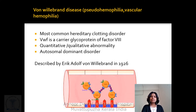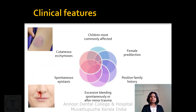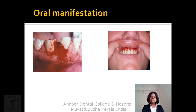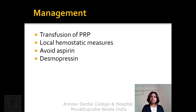Von Willebrand disease, also known as pseudohemophilia or vascular hemophilia, is the most common hereditary clotting disorder. Von Willebrand factor is a carrier protein for factor 8, and the disease involves quantitative or qualitative abnormality of this factor. It is an autosomal dominant disorder, first described by Erik von Willebrand in 1926. Clinical features: children are most commonly affected, there is a positive family history, excessive spontaneous bleeding after minor trauma, spontaneous epistaxis, and cutaneous petechiae. Oral manifestations include spontaneous bleeding from the gingiva. Laboratory findings are similar to hemophilia; Von Willebrand factor antigen assay can also be performed. Management includes transfusion of PRP, local hemostatic measures, and avoiding aspirin.